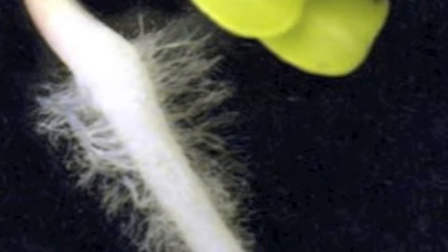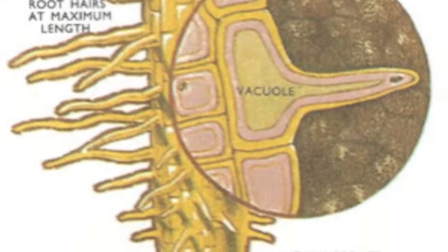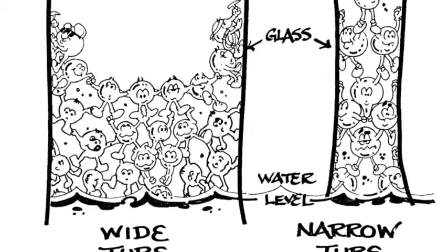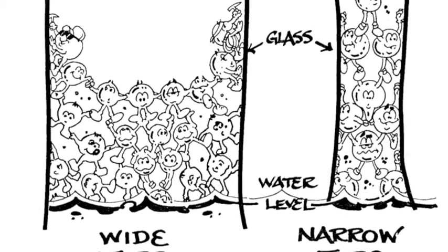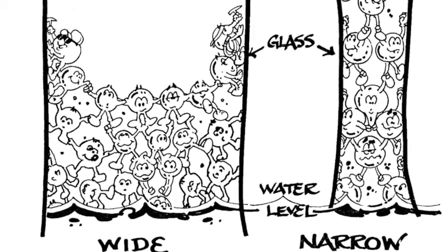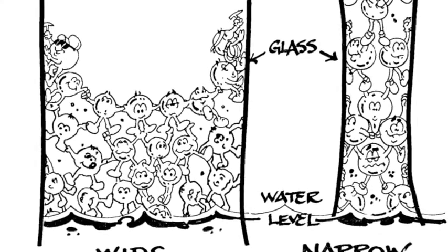A combination of both cohesion and adhesion creates capillary action, and water is able to move up the stems of plants against gravity due to the strength of adhesion pulling up the water molecules that stick together due to cohesion. Here's a photo of the root hairs for a closer look, and this picture depicts capillary action — you can see the cohesion and adhesion between the molecules.